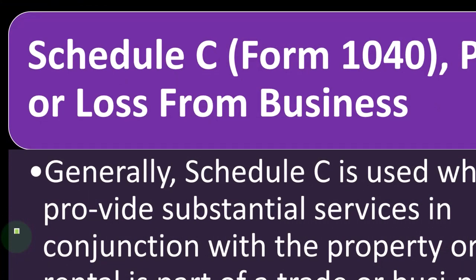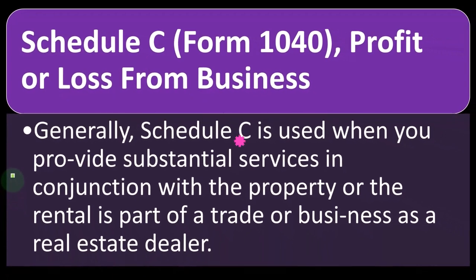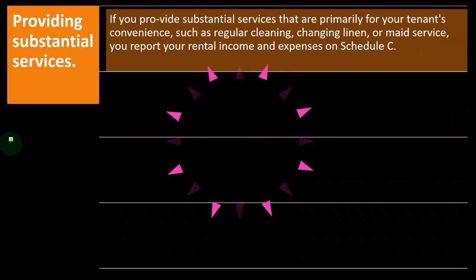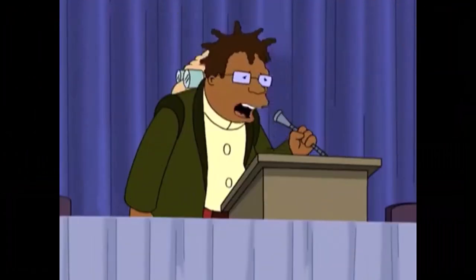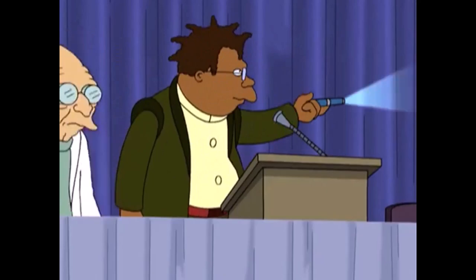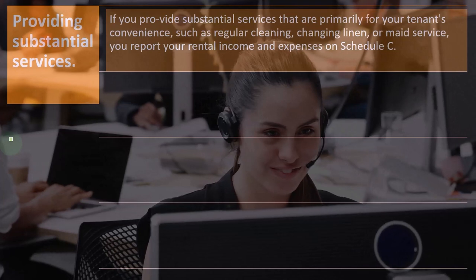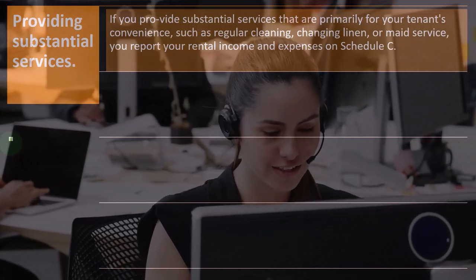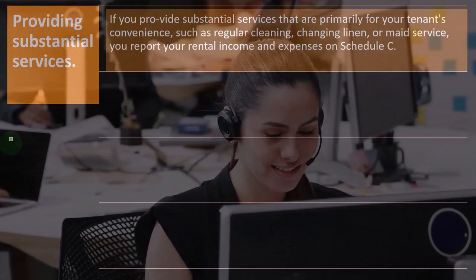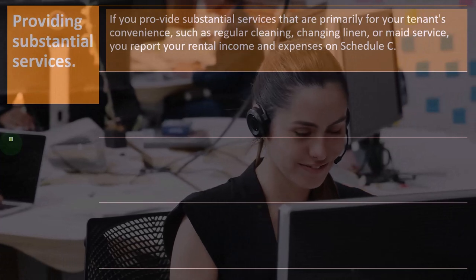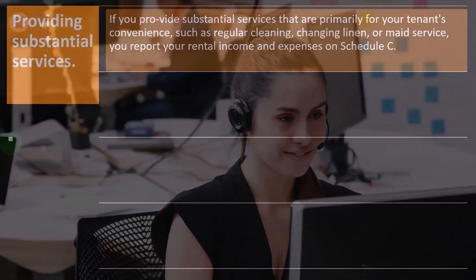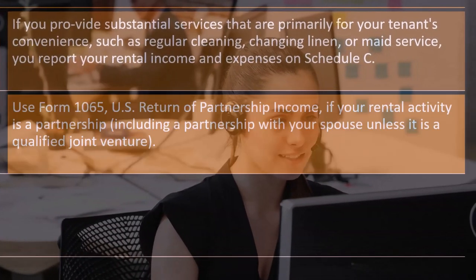Generally, Schedule C is used when you provide substantial services in conjunction with the property, or the rental is part of a trade or business as a real estate dealer providing substantial services. If you provide substantial services that are primarily for your tenants' convenience — such as regular cleaning, changing linen, or maid service — you report your rental income and expenses on Schedule C because you're performing significant service items.